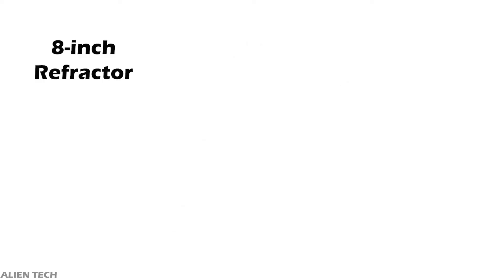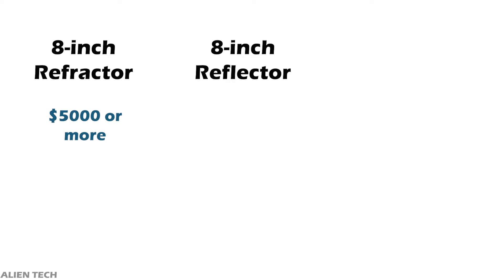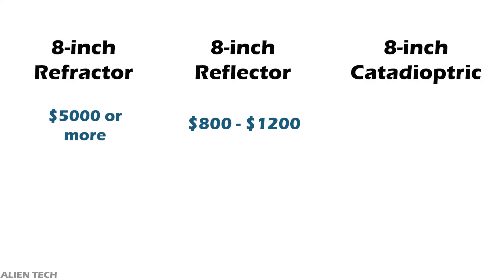For example, if you want to buy an eight-inch refractor telescope, it would probably cost you more than five thousand dollars — it's simply not practical to manufacture bigger aperture refractors. If you want to buy the same eight-inch reflector telescope, it will cost you probably 800 to 1,200 dollars. If you want to buy the same eight-inch catadioptric telescope, it'll cost around 1,200 to 2,500 dollars. That's how various telescopes are classified into the main three types.